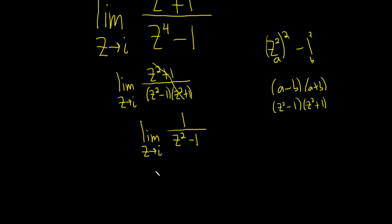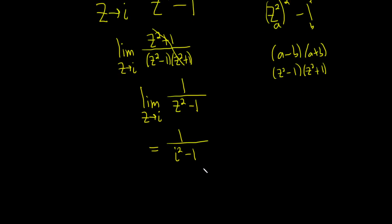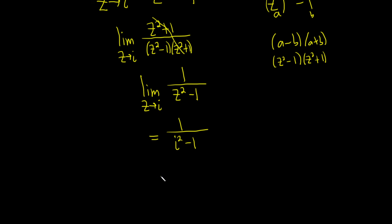When you plug in the i, you drop the limit notation. So this is 1 over i squared minus 1. i squared is negative 1, so this is 1 over negative 1 minus 1. So this is just 1 over negative 2, which is just negative 1 half.